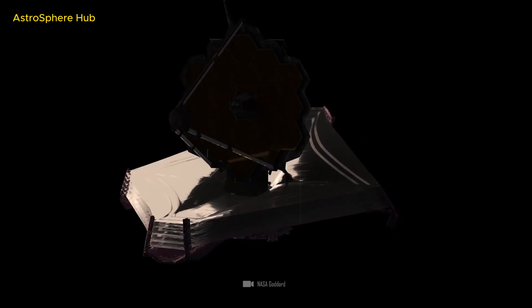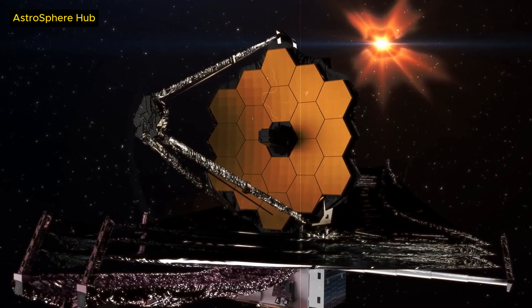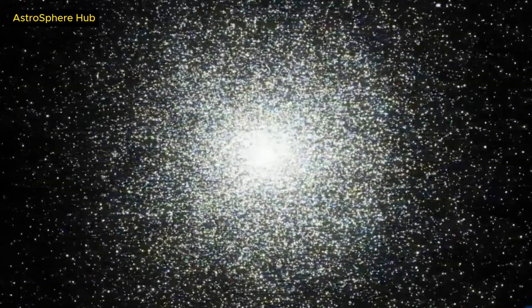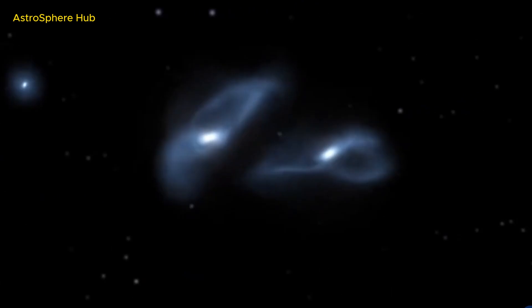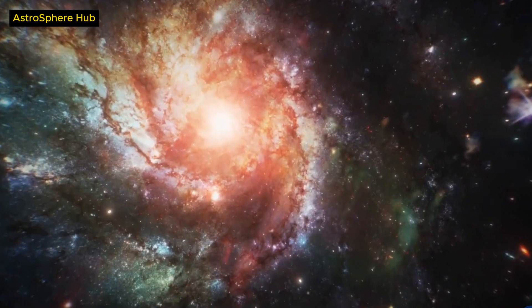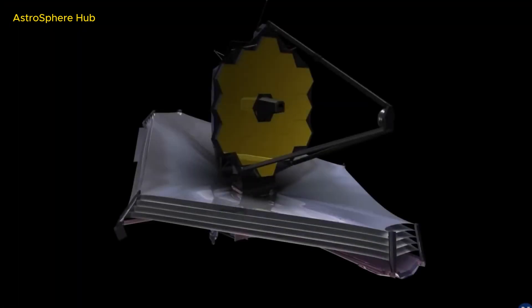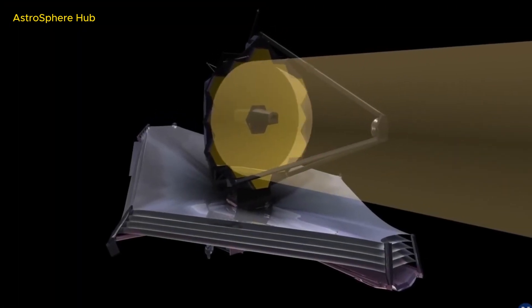Webb observed it at a redshift of z equal to 8.3, which means that the light we see from it left the galaxy when the universe was only about 600 million years old. This is a very early epoch in the history of the universe when the first stars and galaxies were starting to form.